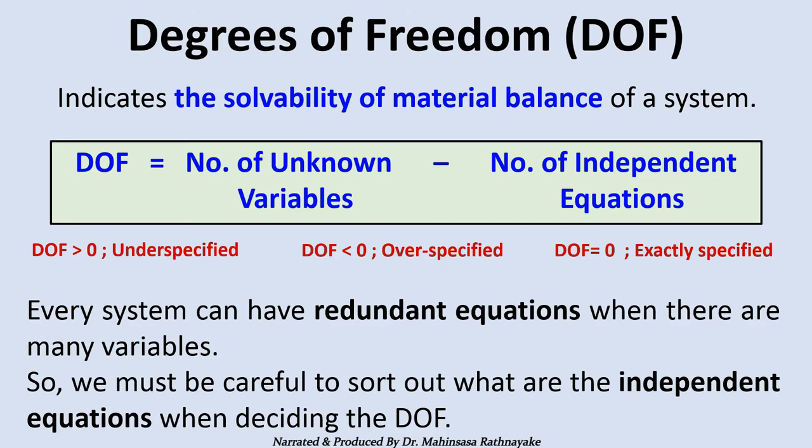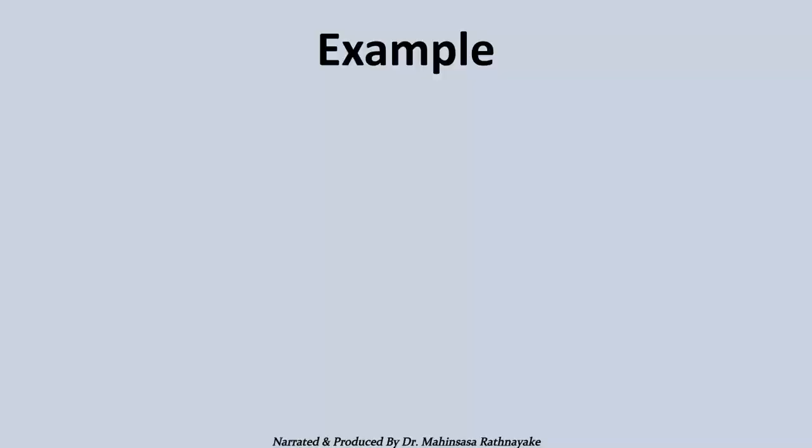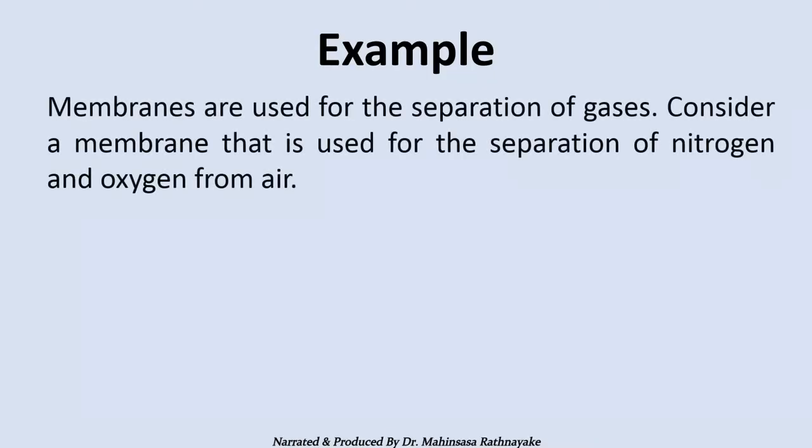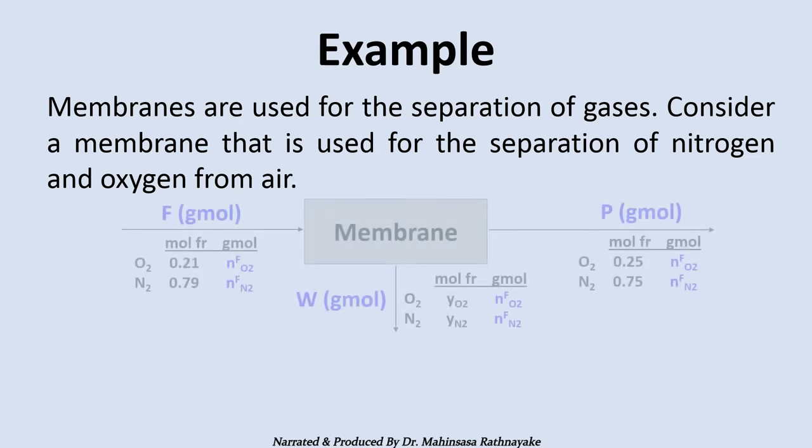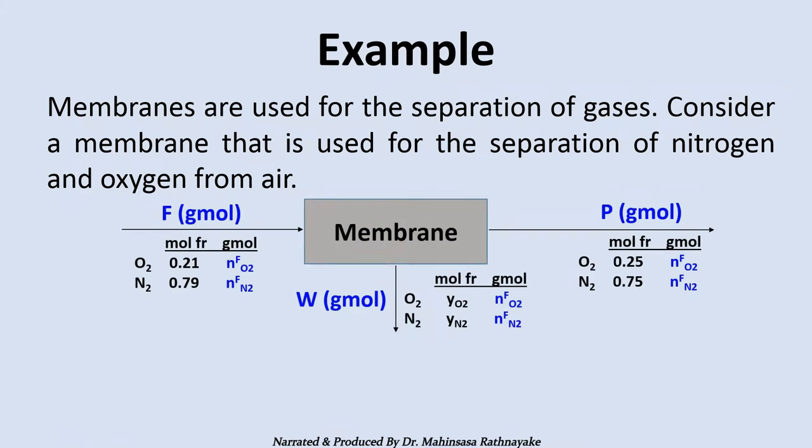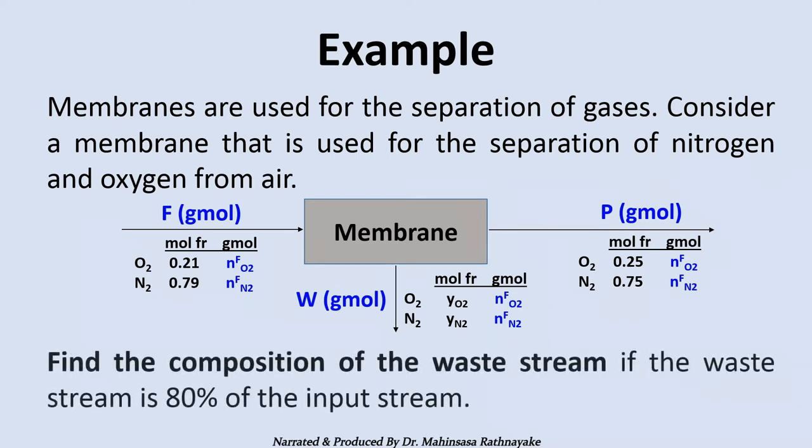Let's take an example problem and see how we can use the Microsoft Excel software to solve a material balance problem with a non-reactive system. Membranes are used for the separation of gases. Consider a membrane that is used for the separation of nitrogen and oxygen from air. The figure shows you a separator with a non-porous membrane that is made of porous graphite with a very thin layer of a polymer coating. We have to find the composition of the waste stream if the waste stream is 80% of the input stream.